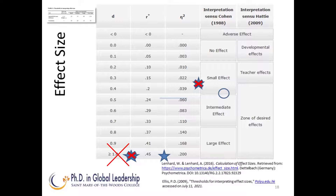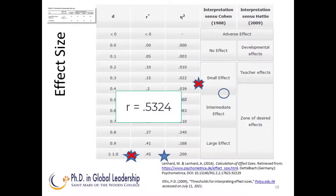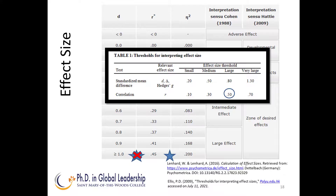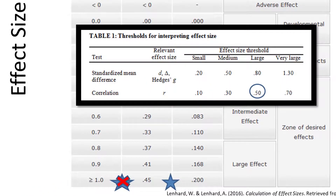A common effect size statistic for the Mann-Whitney test is R, which is the absolute value of Z from the test divided by the square root of the total number of observations. If you use the absolute value of Z, R is positive. If you do not, it is negative, but the amount will still help you determine the effect size. In this case, based on Ellis, the effect size would be large.